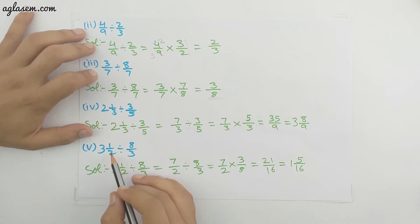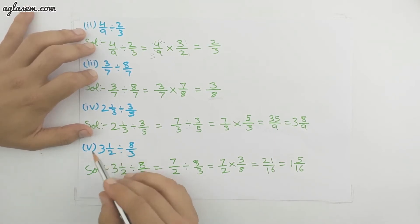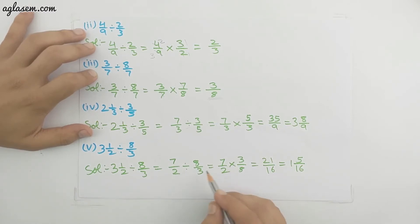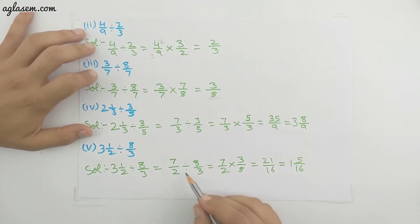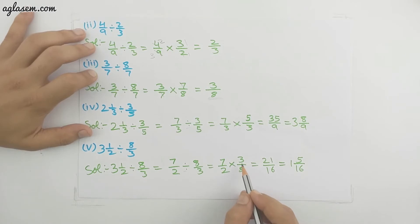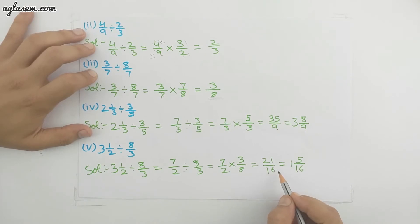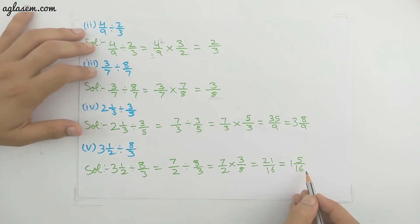Fifth part: 3 whole 1/2 divided by 8/3. The mixed fraction 3 whole 1/2 changes to 7/2. Dividing 7/2 by 8/3 becomes 7/2 multiplied by 3/8. Multiplying 7 by 3 and 2 by 8 gives 21/16, which is an improper fraction. We change it to the mixed fraction 1 whole 5/16.